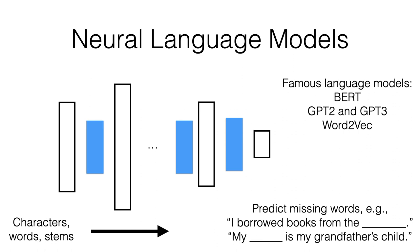In the second example — 'My blank is my grandfather's child' — there are multiple words that could fit: mother, aunt, uncle, father. The model has to learn that these words are interchangeable in that context. The other really clever thing is that you don't have to go and label data — if you have a lot of text, you can just create these fill-in-the-blank examples automatically. You just need text to generate this training data.